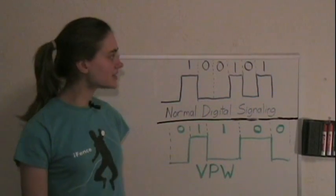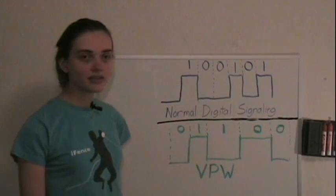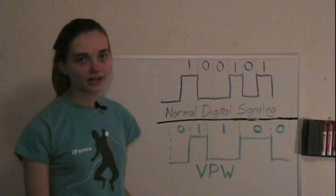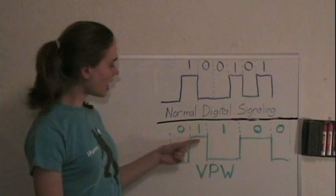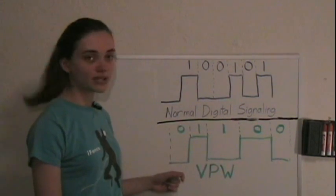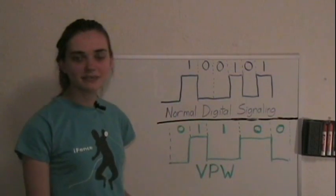Most digital signaling uses high and low voltages to represent digital ones and zeros. However, the variable pulse width protocol uses a slightly different method. It varies the duration of the high and low periods to indicate ones and zeros, and it uses a voltage transition to indicate that the next bit has started.